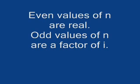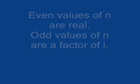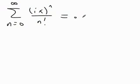So what does that allow me to do? It allows me to break up the sum n equals 0 to infinity, ix to the n over n factorial, into two parts.